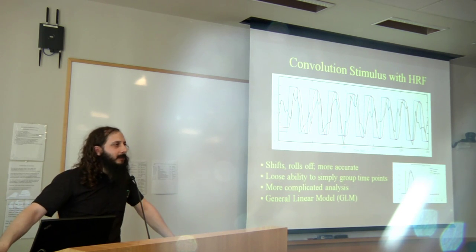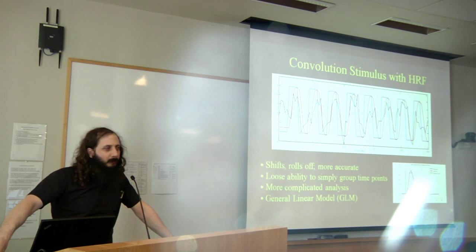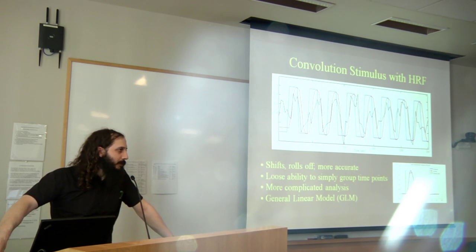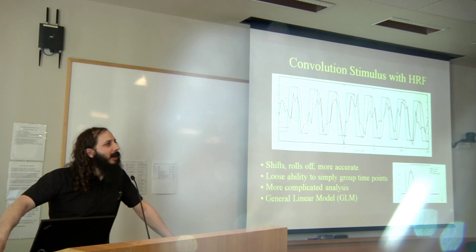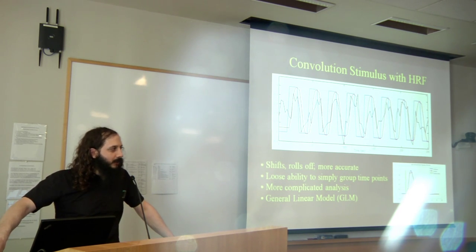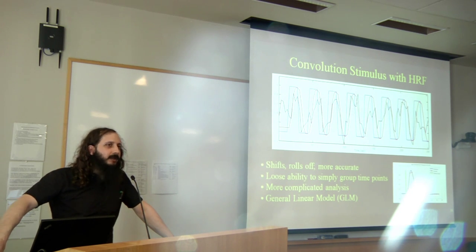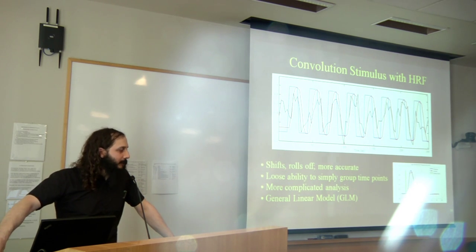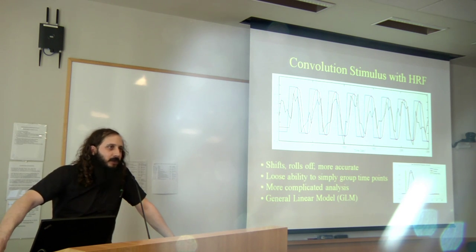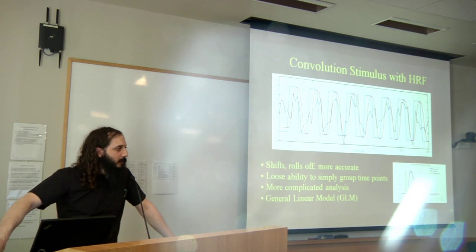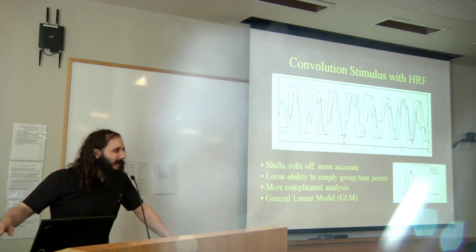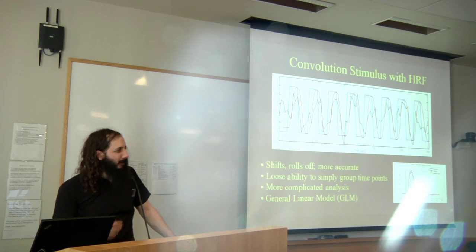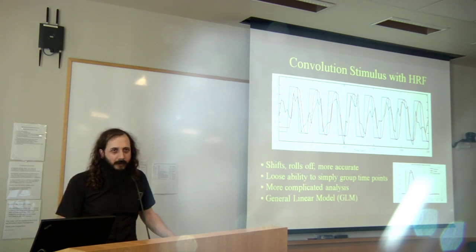The way to handle this is by taking the ideal neural response — the blue waveform representing expected neuron activation — and convolving it with the hemodynamic response function to get a better prediction of what the BOLD signal should look like in responding voxels. The red curve shows this convolution with the hemodynamic response function, and it matches the observed data much better than the blue curve. So once we take hemodynamics into account, we have a much better sense for what the observed response should look like.